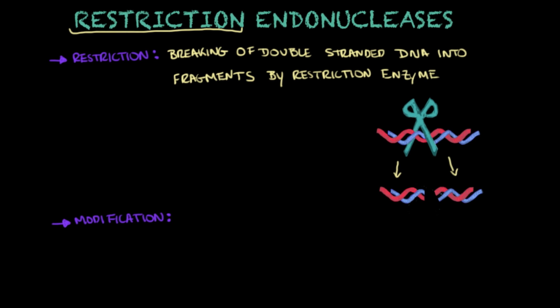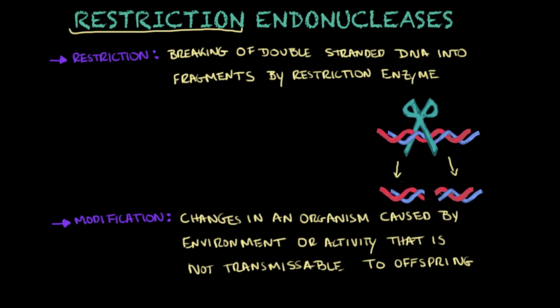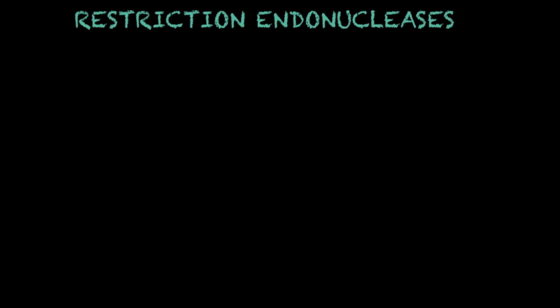The second definition I would like to give you is 'modification.' This means changes in an organism caused by environment or an activity, and it can also be caused by enzymes — because you're going to see enzymes called modification-something-ases — and what they do is change the organism in a way that is not transmissible to the offspring. So whatever change is caused by modification, the offspring will not have it. So we've talked about restriction versus modification, and we can start understanding what restriction endonucleases do.